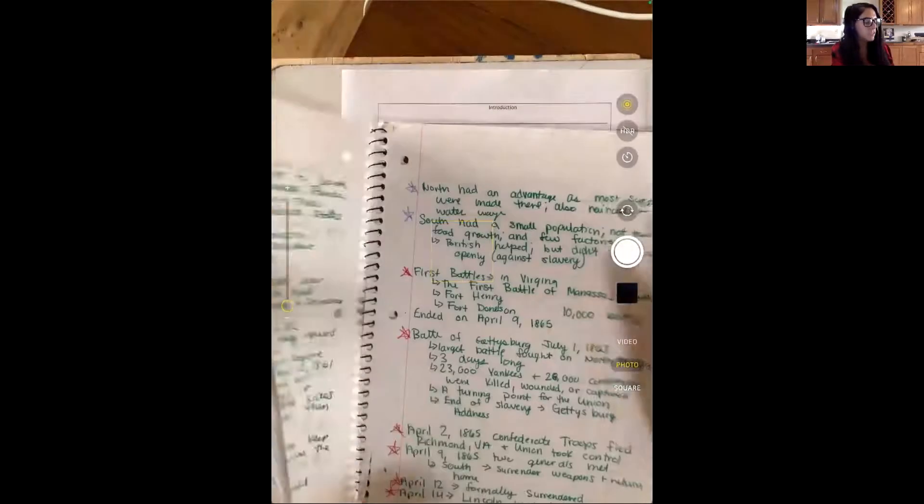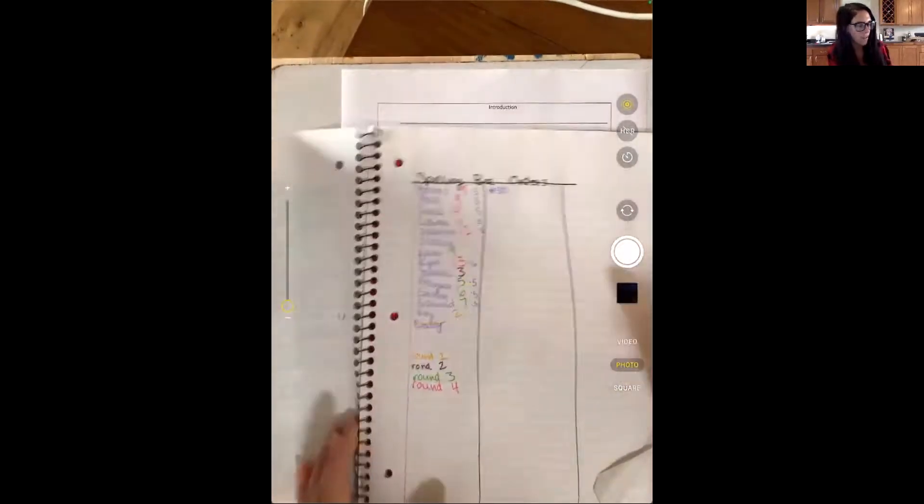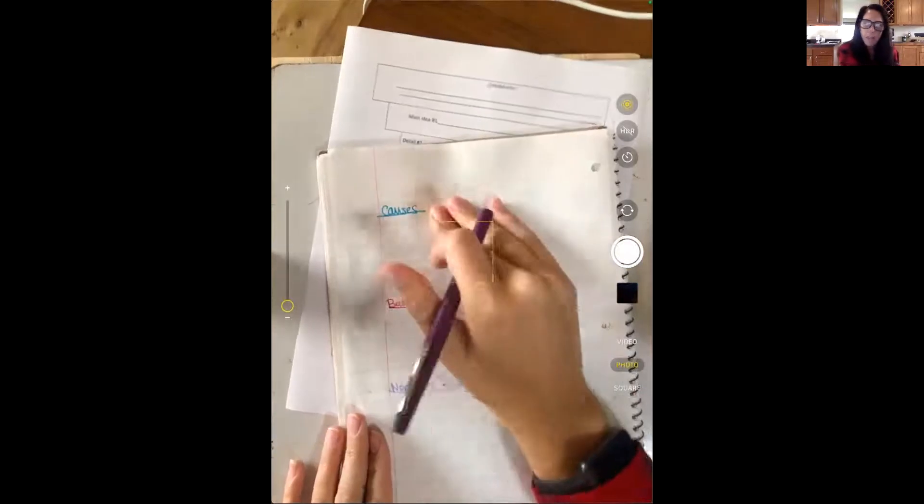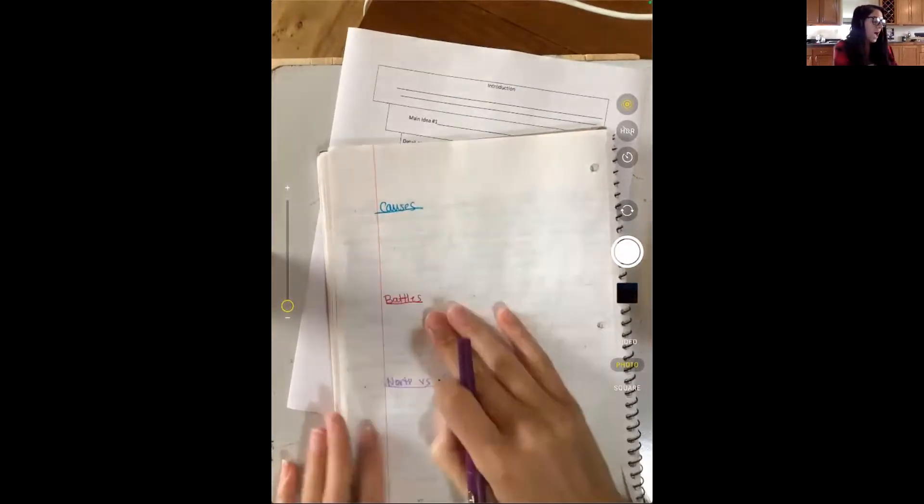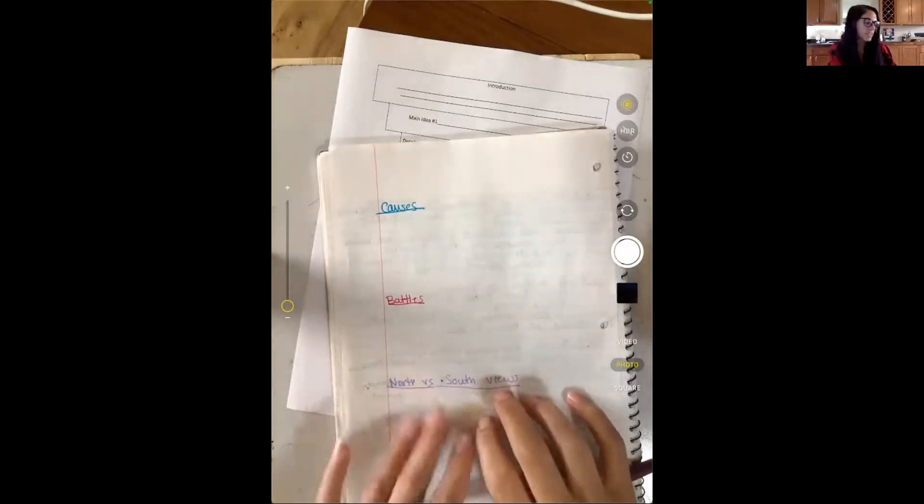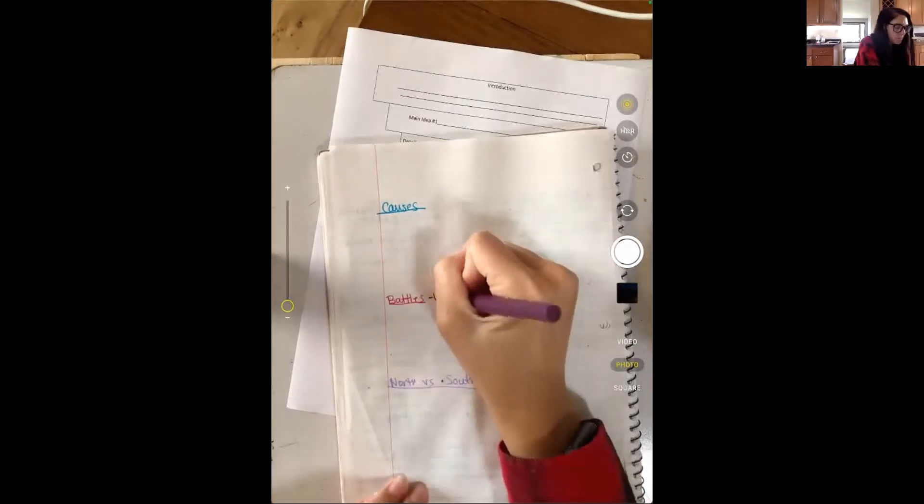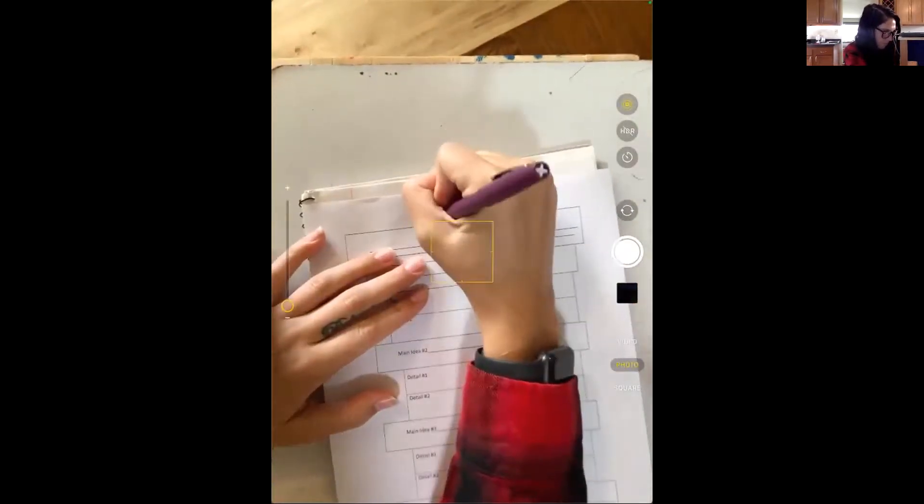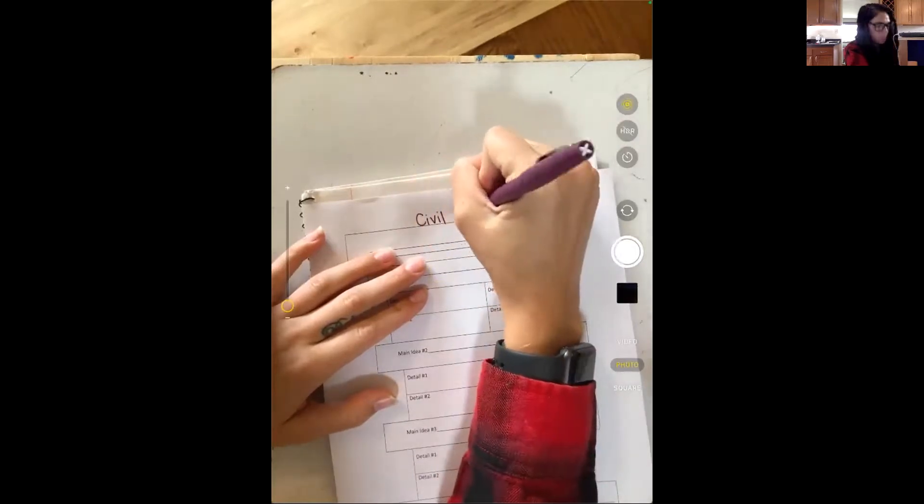So after looking at my categories, I kind of came up with these three things. I have the causes, what caused the Civil War. I have the battles or what happened during the Civil War. And then I have the North versus South and how their views were different. So I'm going to take those main ideas and I'm going to fill them in on my graphic organizer. So I'm going to first write my topic up on the top. Civil War.